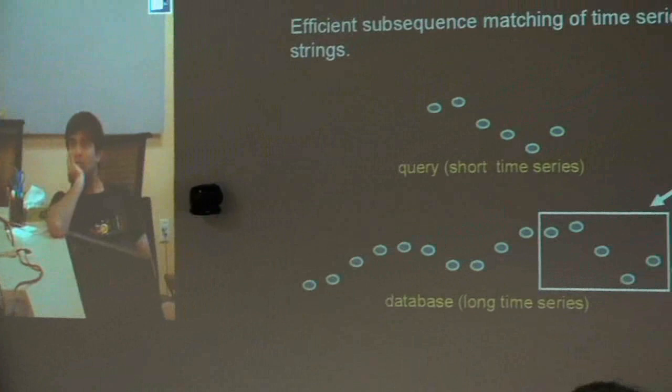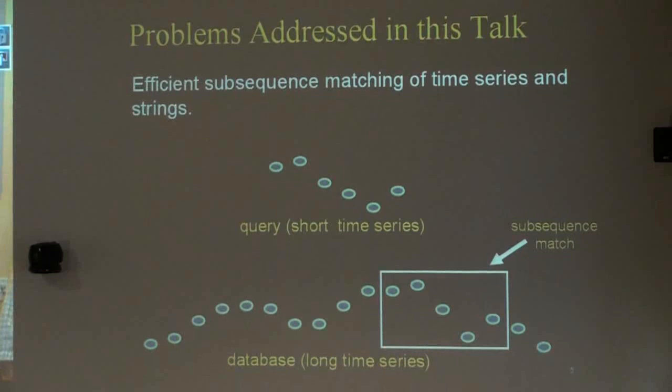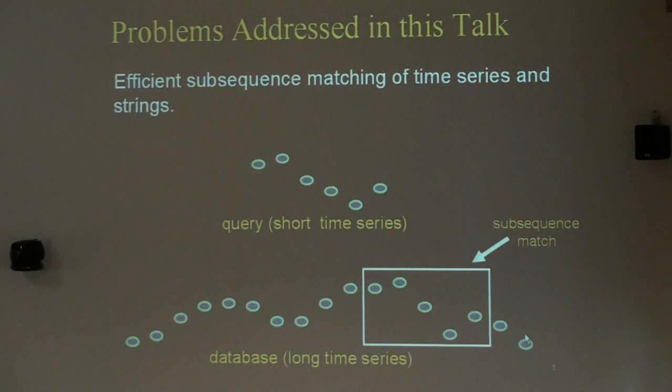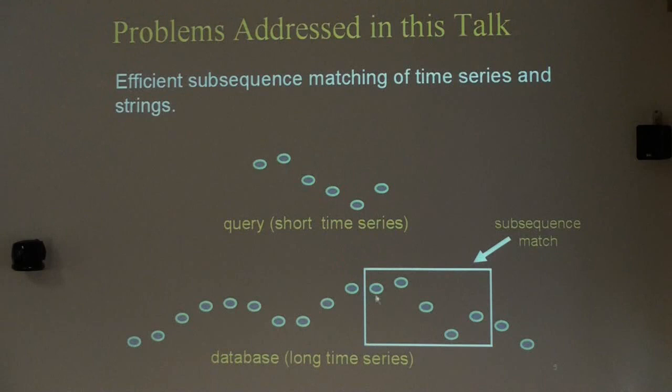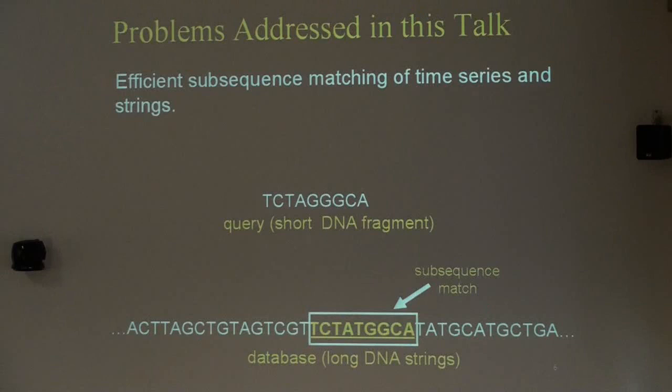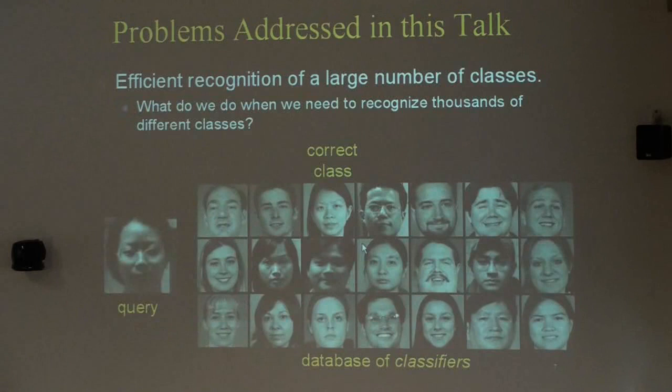The second part of the talk will address the problem of efficient subsequence matching in databases of time series and strings. For example, you can have a very long time series in the database and a short query for which you'd like to find the best matching subsequence. The same version of the problem exists for strings — for example, a DNA sequence with millions or billions of letters, where you submit a shorter sequence and want to find the best subsequence match.